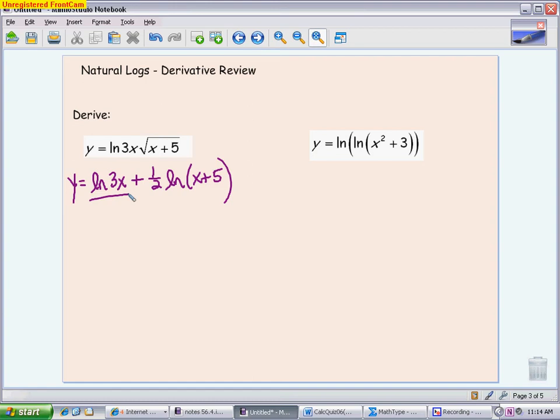When I go to derive, keep in mind the derivative is the derivative of u over u, or du over u. So it's the derivative of 3x over 3x. I think a lot of people realize those 3s are going to cancel, so if you want to go straight to 1 over x, that's fine. Plus, we have 1/2 times the derivative of x+5, which is 1 over x+5. You can leave it like that and that problem is finished.